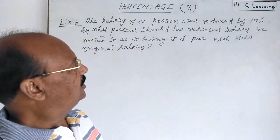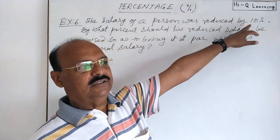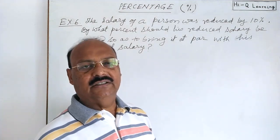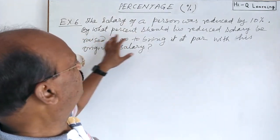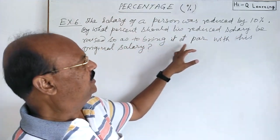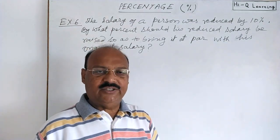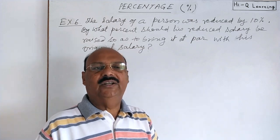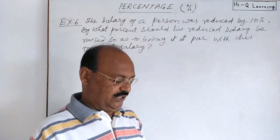For the sake of convenience, we start the calculation with a salary of rupees 100. Reduced by 10 percent means in 100 rupees, 10 will be reduced, so the remaining salary is 100 minus 10, which is 90 rupees. The question is: by what percent should his reduced salary be raised so as to bring it at par with his original salary? How much percent of 90 should be added to 90 so that the total becomes rupees 100, equal to the original salary?